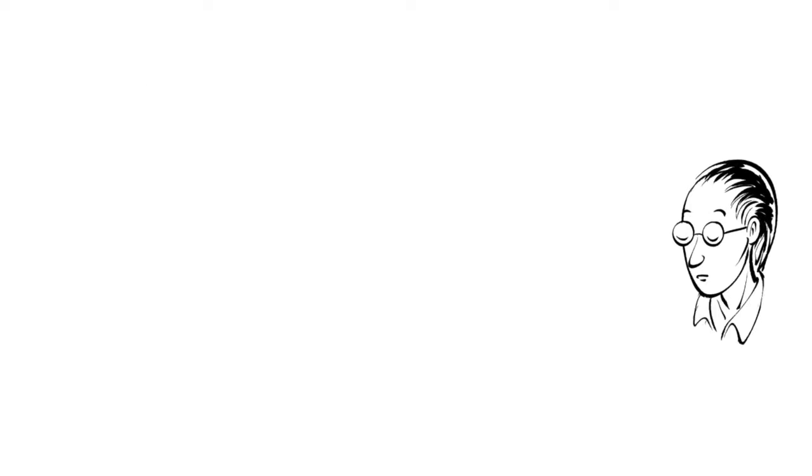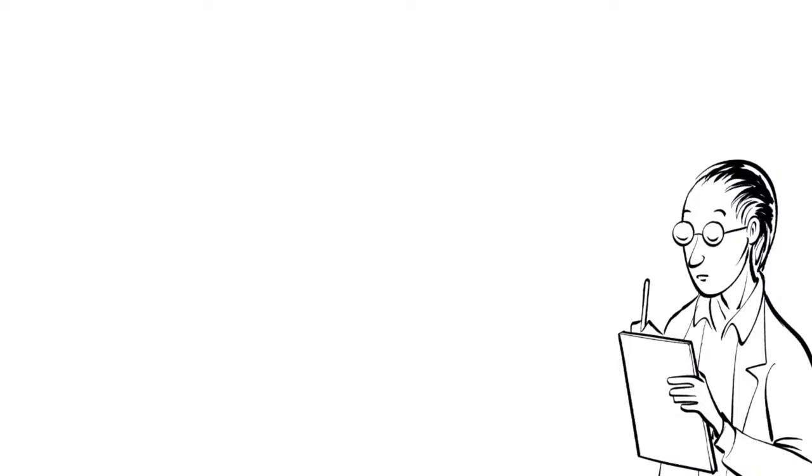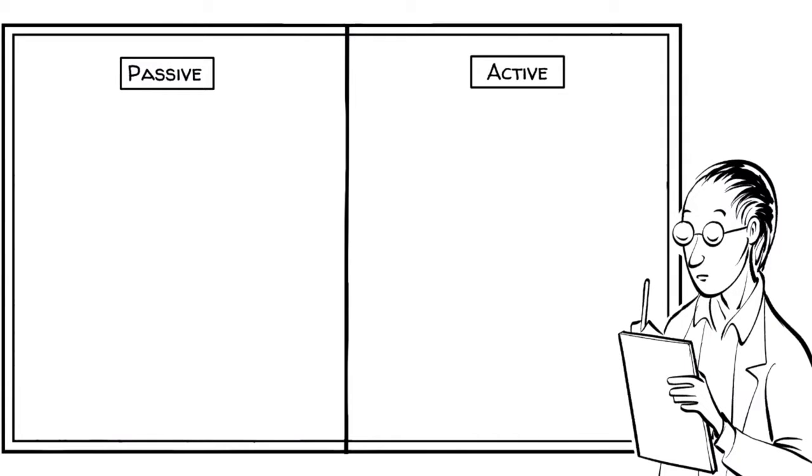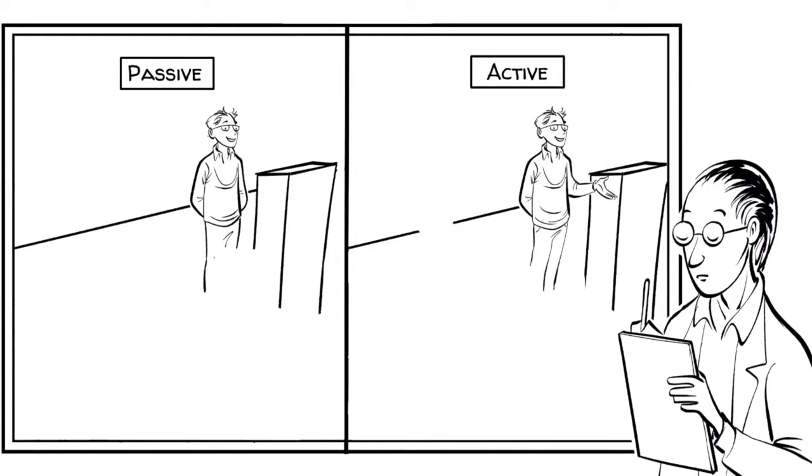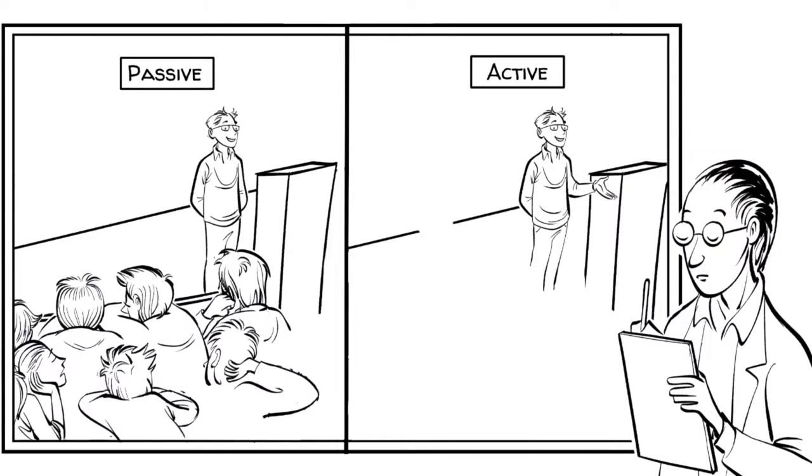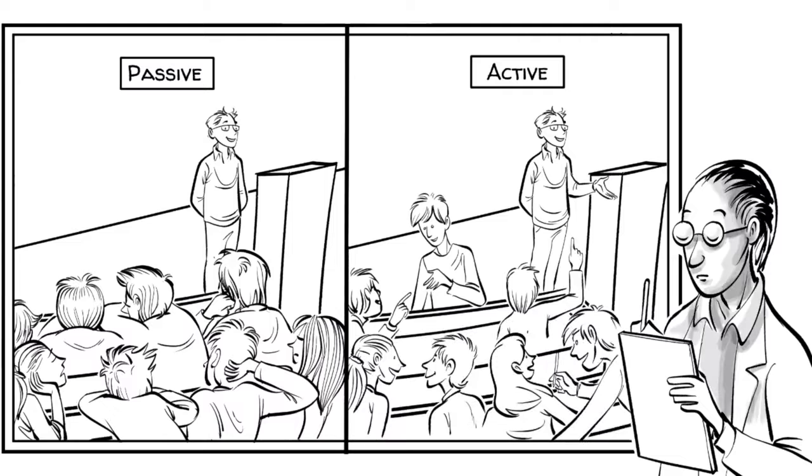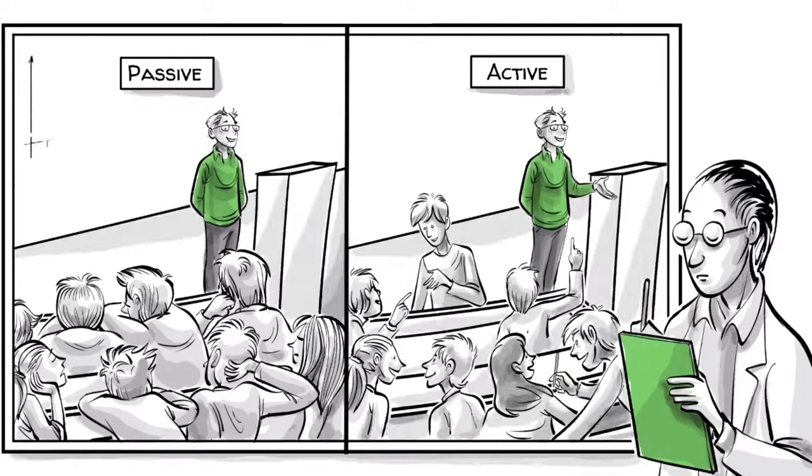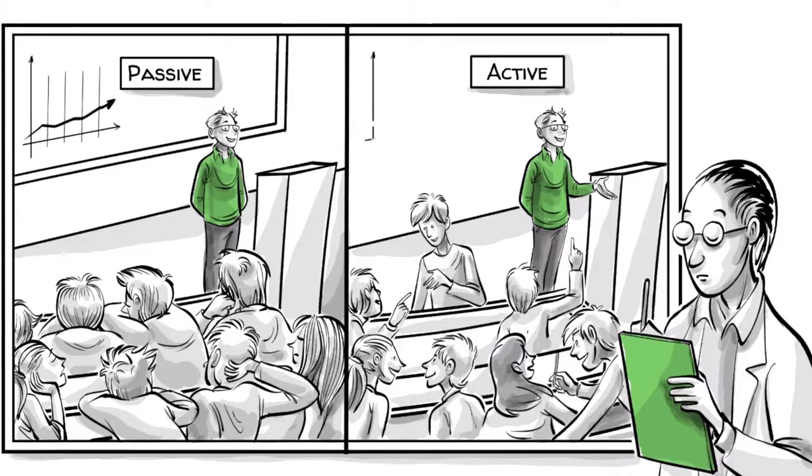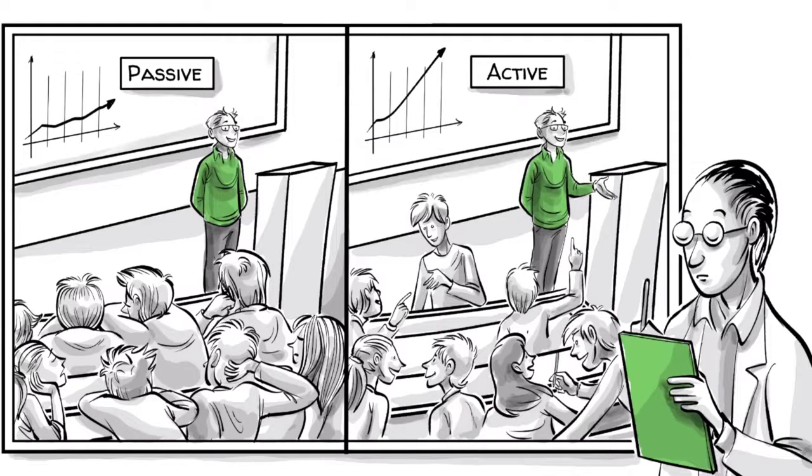A large body of research has shown big differences in the outcomes between passive and active learning. In one carefully executed experiment, physics instructors taught their course in two ways. Some classes were taught in a conventional style, and others using active learning. Even though the teachers were the same and the students were similar, on average the active learners doubled their understanding when they were tested at the end of the course.